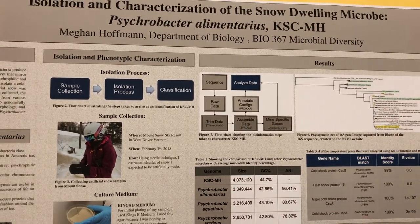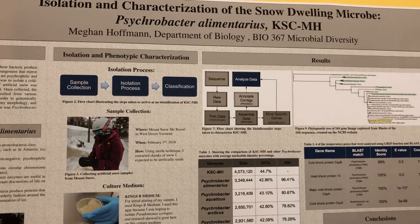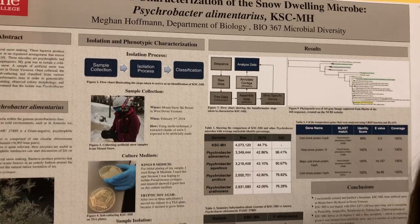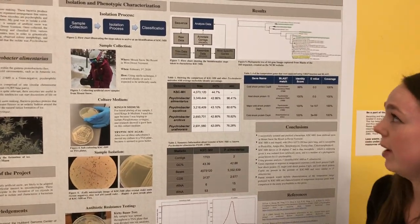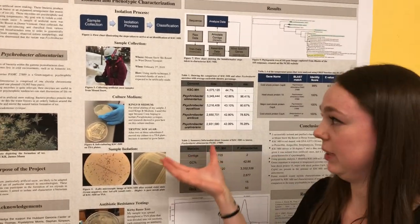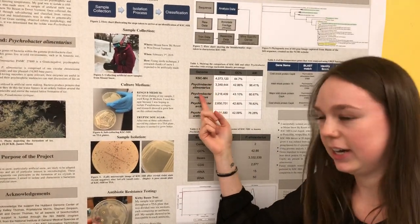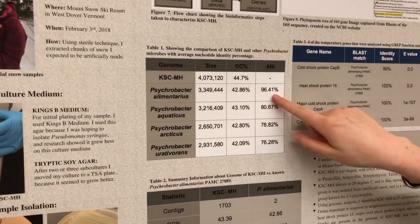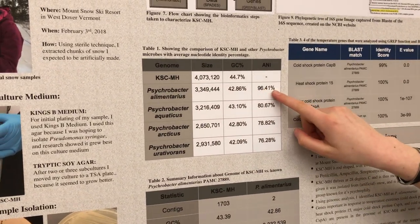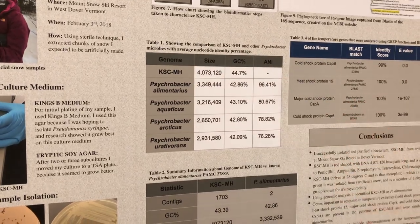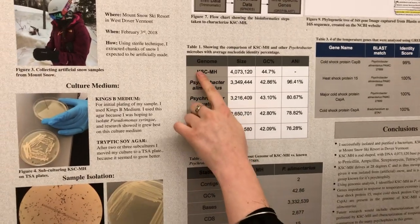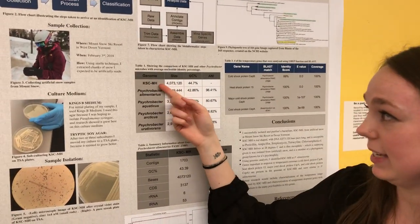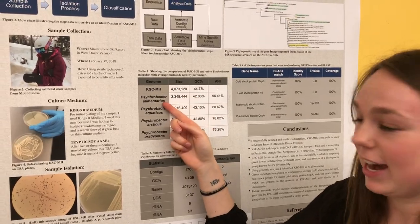I then annotated the contigs with identified genes and mined out the 16S rRNA gene. I plugged it into BLAST from the NCBI website, which led me to believe that my bacterium was Psychrobacter elementarius. As you can see in the graph, there was a 96.4% average nucleotide identity comparison between my bacterium and this reference, indicating an extremely high likelihood that KSC-MH is Psychrobacter elementarius.